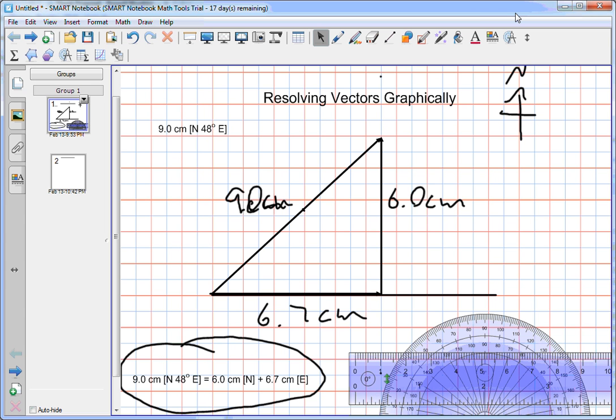Recently, we looked at resolving vectors graphically, and we resolved the vector 9.0 centimeters north, 48 degrees east, into 6.0 centimeters north plus 6.7 centimeters east.